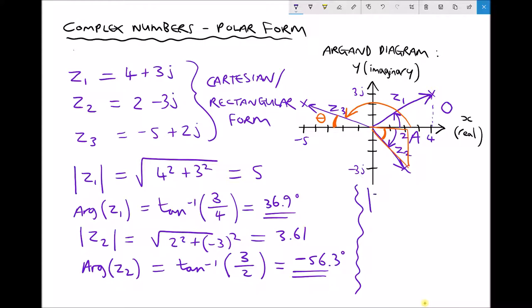Let's begin with our modulus. The modulus of Z3 is the square root of minus 5 squared which is just 5 squared plus 2 squared. Therefore the modulus of Z3 equals 5.39.